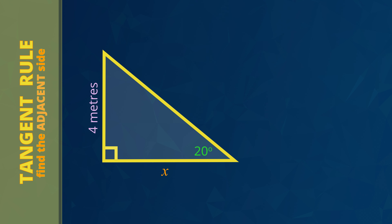Now here's another great trick to remember: when X is down on the bottom of the fraction, you divide in the next line. D for down, D for divide.